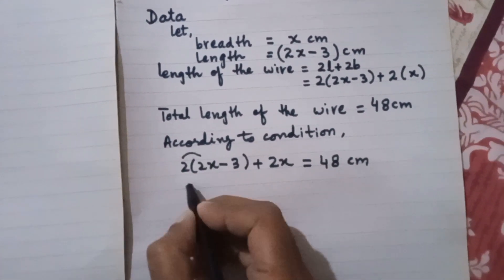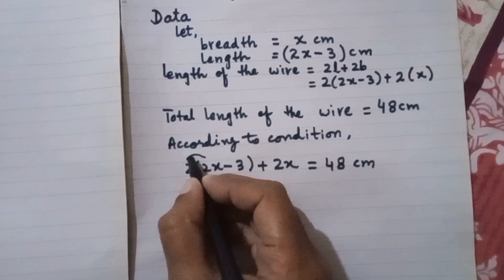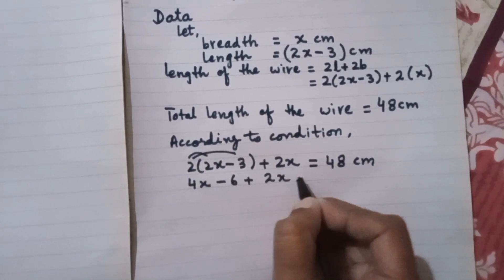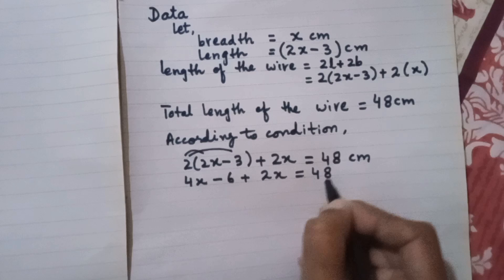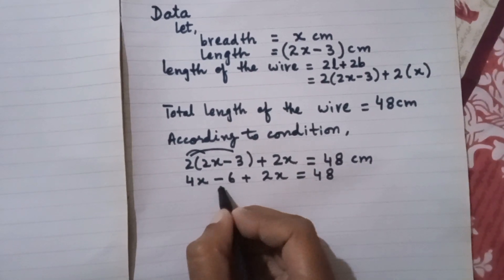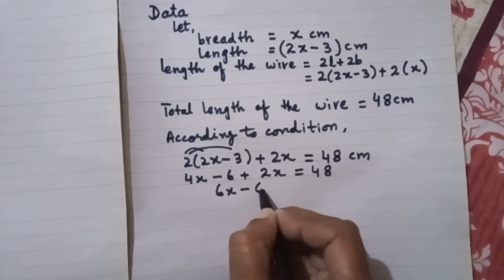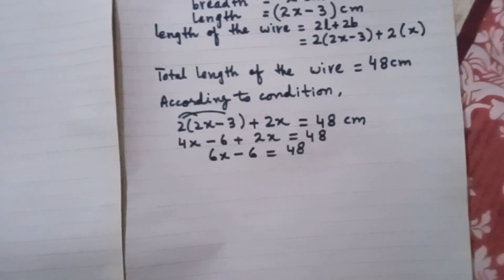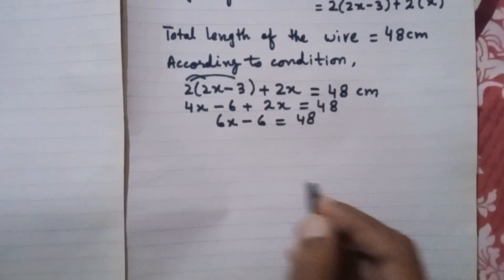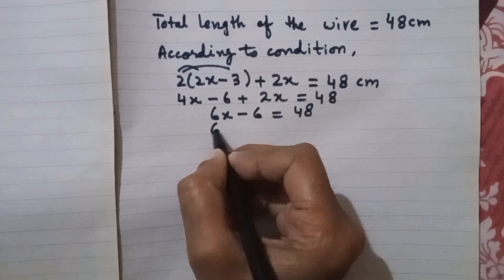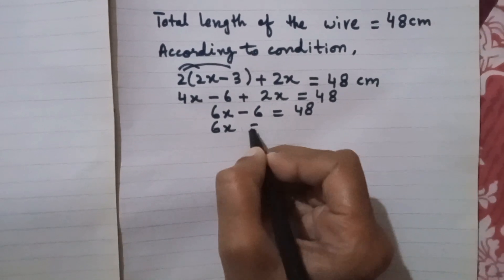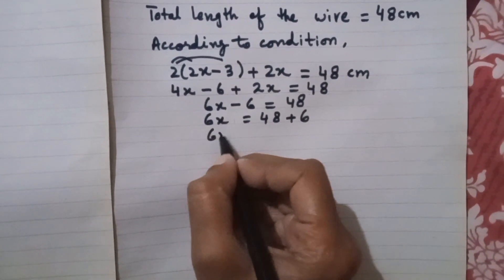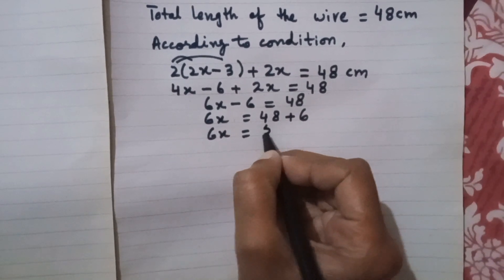We will find out the breadth and then the length of the rectangle. Solving: 2 times (2x minus 3) plus 2x equals 48. Expanding: 4x minus 6 plus 2x equals 48. So 6x minus 6 equals 48, which gives 6x equals 54.